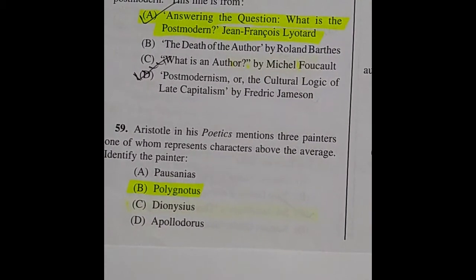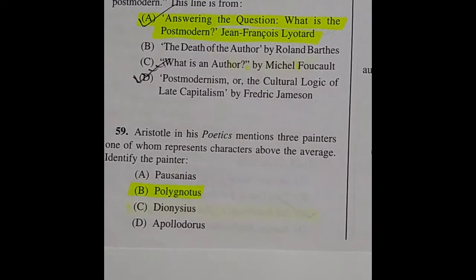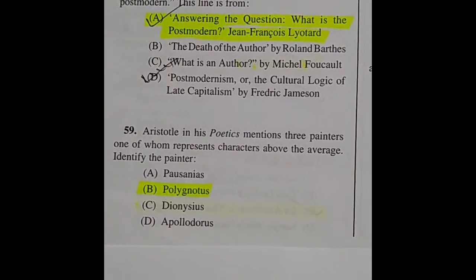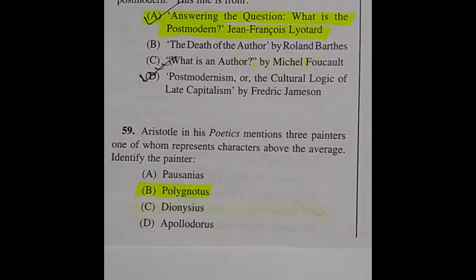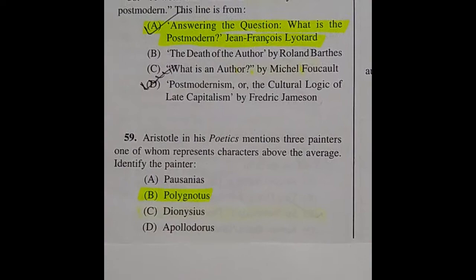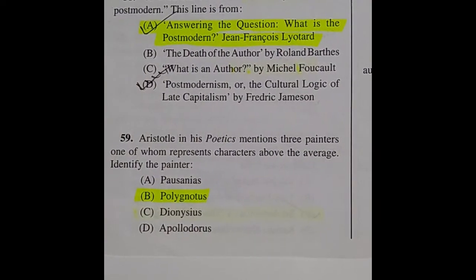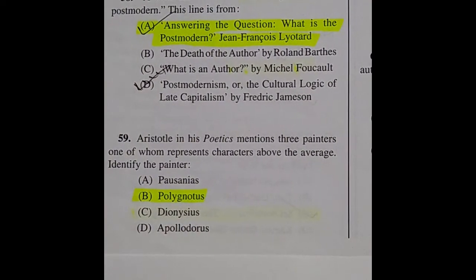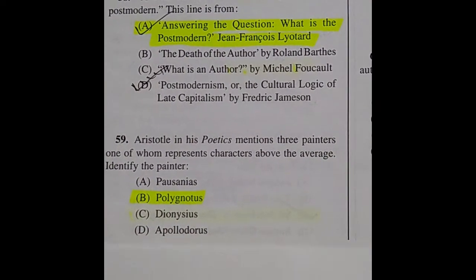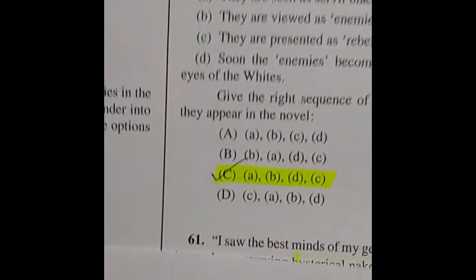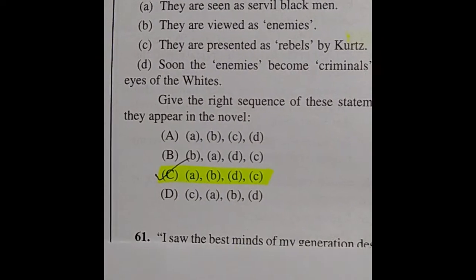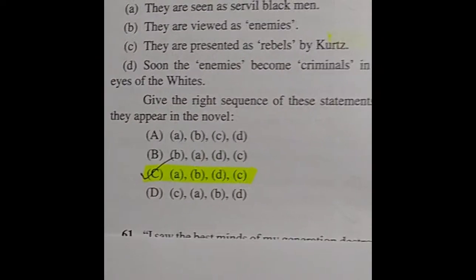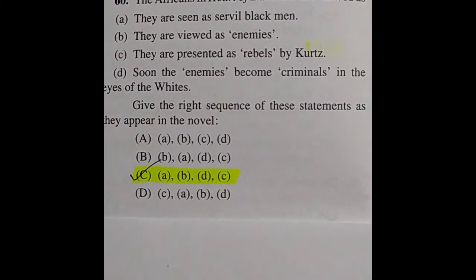Question 59: Aristotle in his Poetics mentions three painters, one of whom represents characters above the average. Identify the painter — the right answer is option B: Polygnotus.